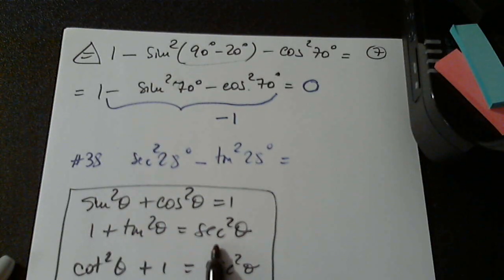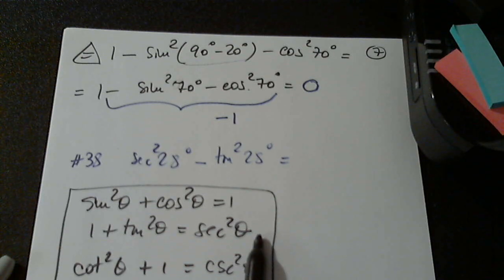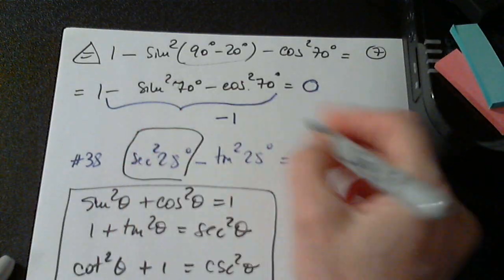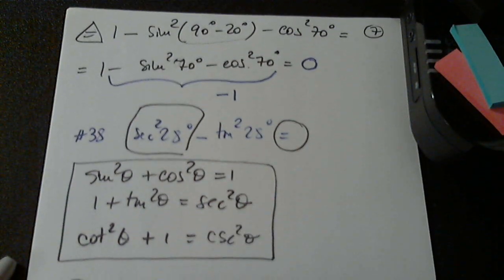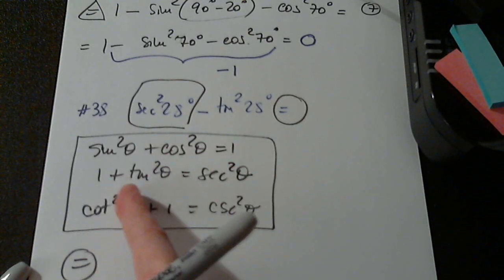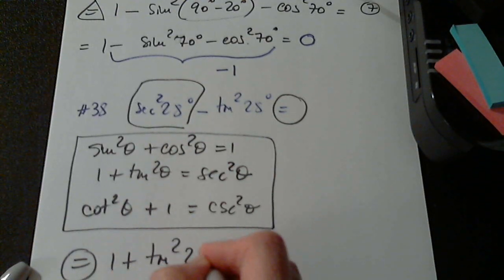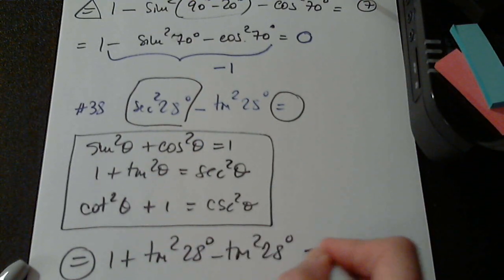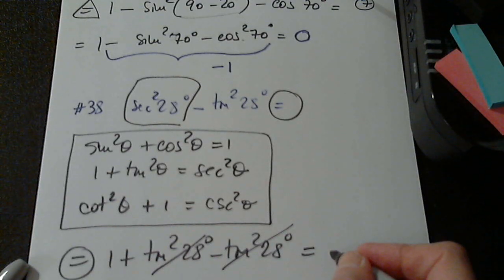So look what I have here. Secant squared of 28 degrees is the same with 1 plus tangent squared of 28 degrees. So I will replace this. Follow the circle. I will replace this by 1 plus tangent squared of 28 degrees minus tangent squared of 28 degrees. Goodbye. So the answer is 1.